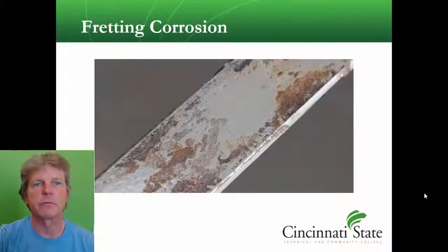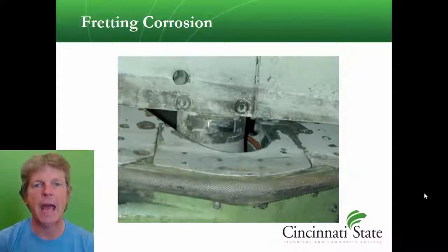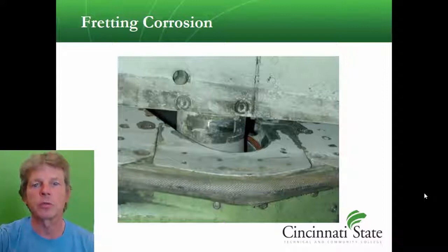Another example is fretting corrosion. Fretting corrosion requires some kind of movement of the metal. We can see fretting corrosion where two pieces of metal attach and they work back and forth, also somewhere like where a rivet or a bolt goes through, which allows movement of the metal.